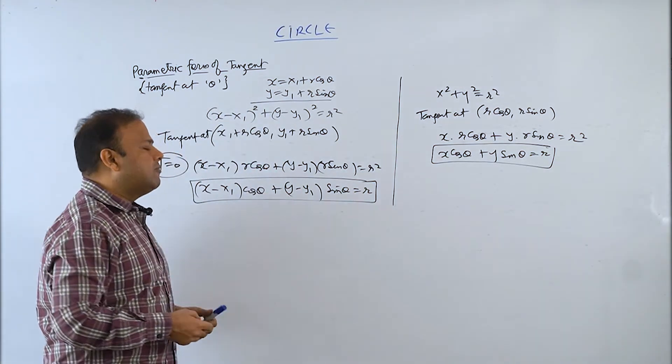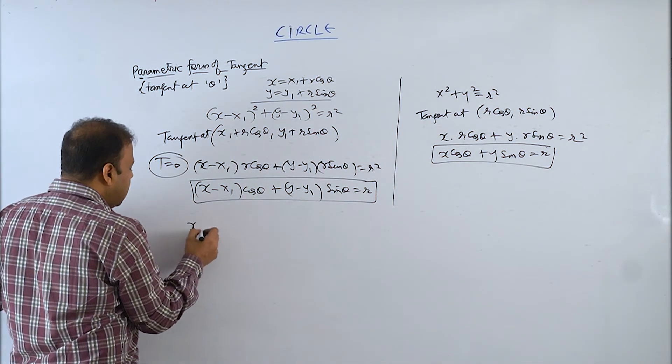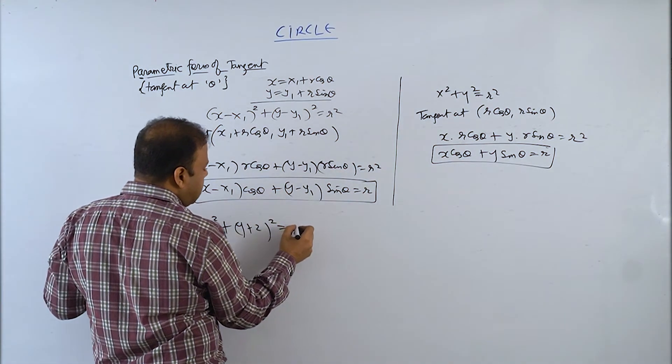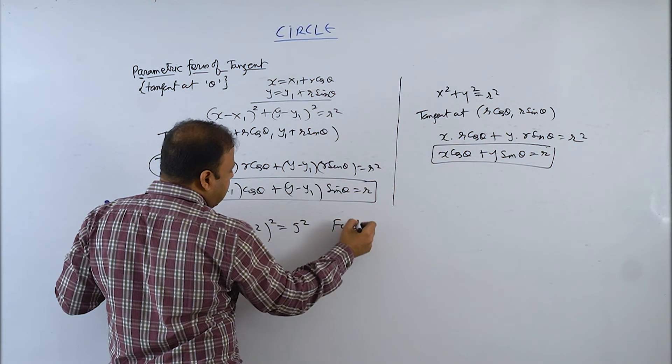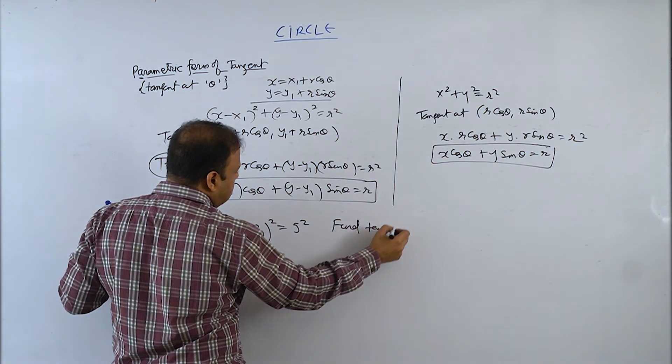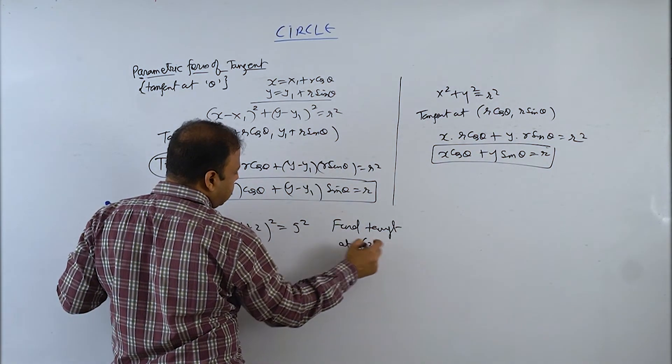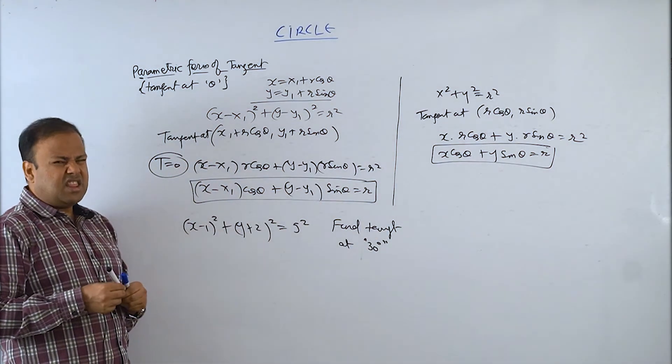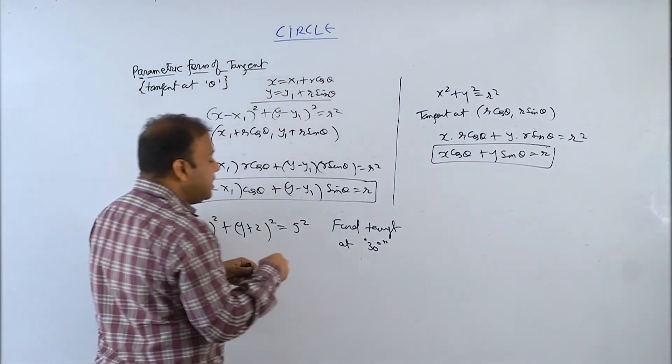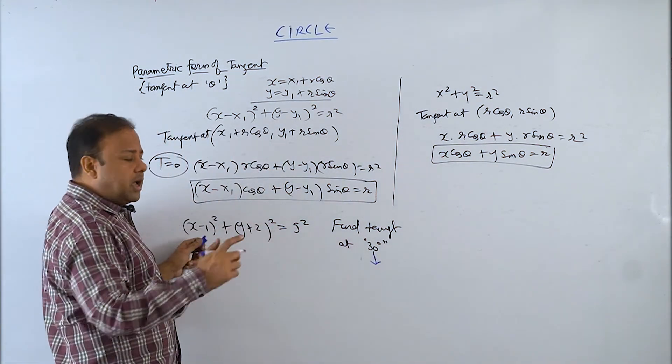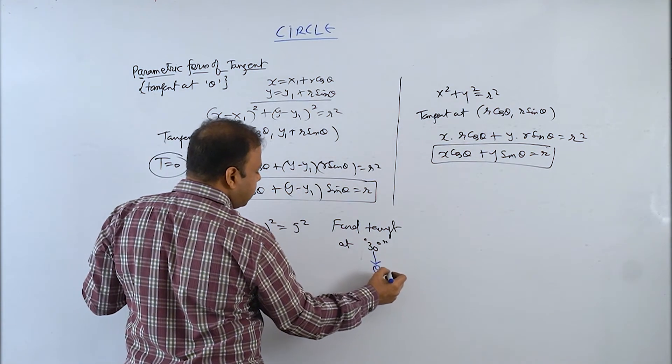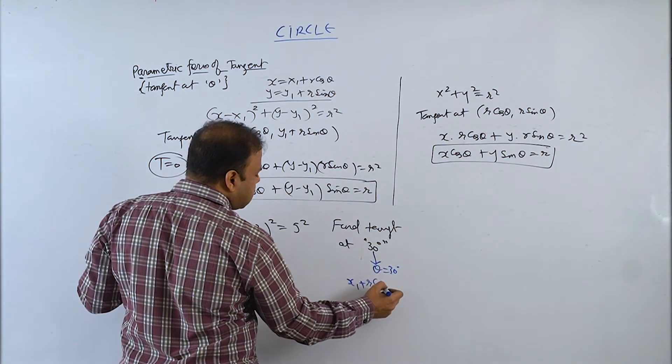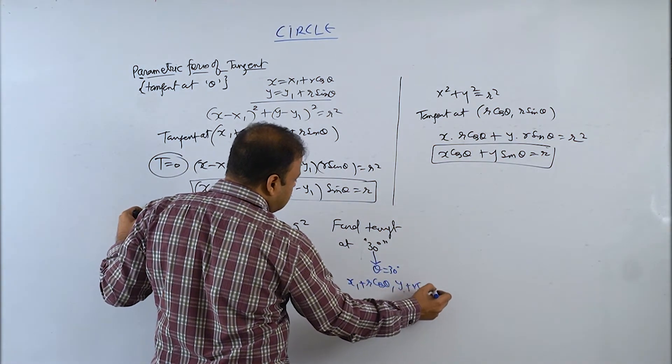Just x minus one whole square plus y plus two whole square equals five square. You need to find tangent at 30 degree. Tangent at 30 degree means this is basically the parameter. If this is the parameter, what will the point be? Point will be x1 plus r cos theta, y1 plus r sin theta.